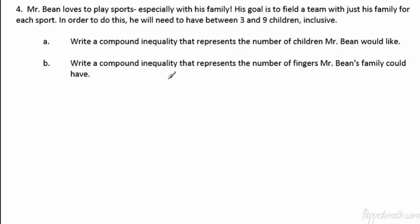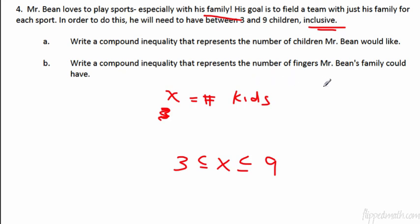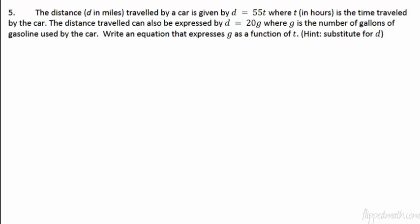How about 4? Bean loves to play sports, especially with his family. He will need to have between 3 and 9 children inclusive. That means including 3 and including 9. So we're going to write a compound inequality. Let x equal the number of kids that Bean has. 3 has to be less than or equal to x, has to be less than or equal to 9. That's easy enough. Now write a compound inequality represents the number of fingers. Let's go to F. Well, if each kid has, let's assume each kid has 10 fingers. That's a pretty safe assumption here. Then we're going to multiply all of these by 10. So we're going to get 30 less than or equal to, we'll call it F, less than or equal to 90. That'll be the number of fingers.